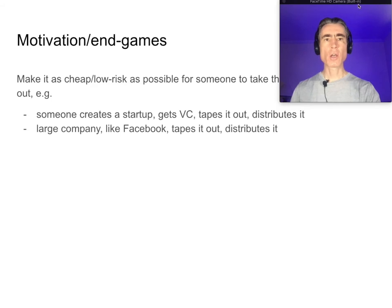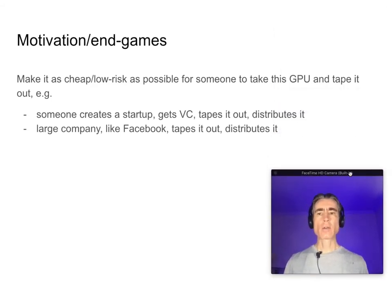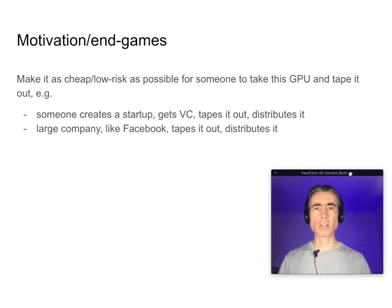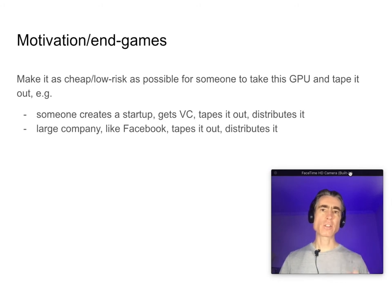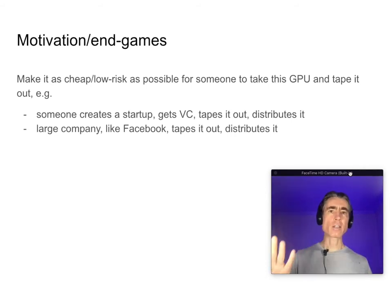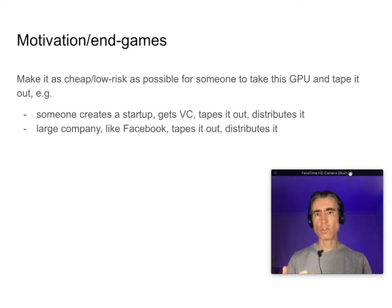What are some of the motivations or end games for this? Taping out an ASIC is very expensive — like millions of dollars. If someone wants to today create a startup that distributes and manufactures a GPU, they have to design and verify that GPU, and that's a significant barrier to entry. If we can create an open source GPU that's fully verified, that significantly reduces the barrier to entry to creating a startup that makes a GPU.